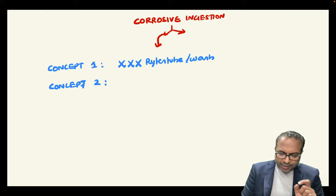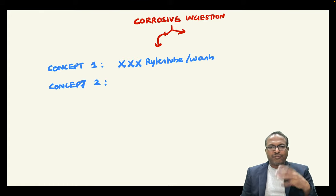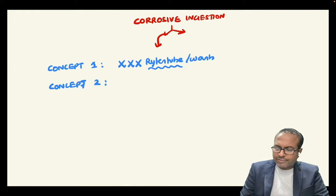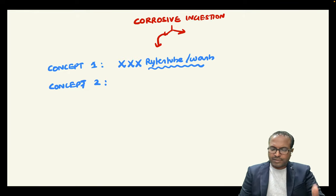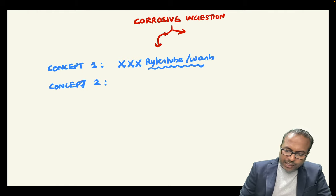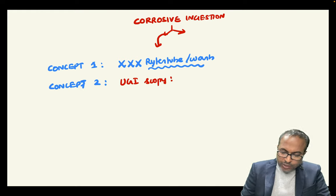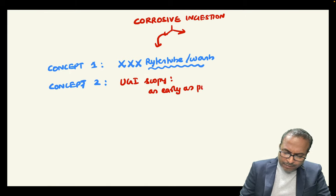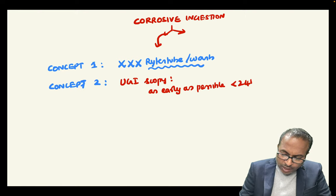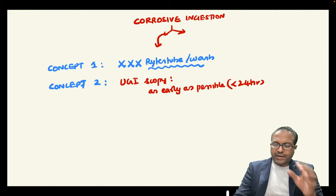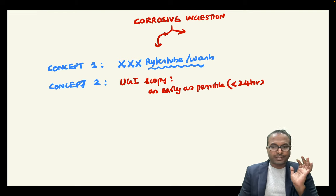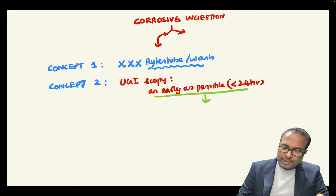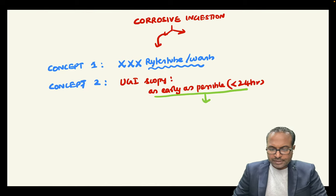Concept 2: Upper GI endoscopy should be done as early as possible — within 24 hours. If done after 24 hours, there is higher risk of esophageal injury. Zargar's classification grades caustic injury: Grade 1 = erythema, Grade 2 = ulcer, Grade 3 = necrosis, Grade 4 = perforation. Endoscopy is important to grade the injury and decide management.